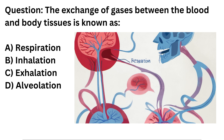Question. The exchange of gases between the blood and body tissues is known as: A. Respiration. B. Inhalation. C. Exhalation. D. Alveolation.